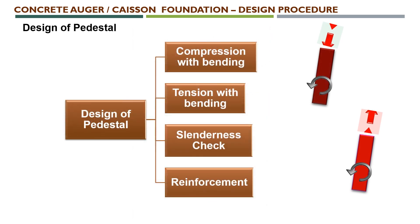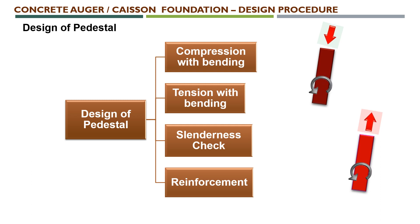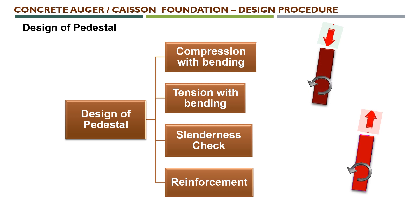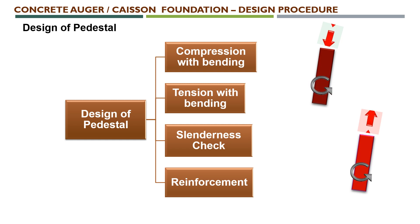Coming to the design of pedestal, we had already seen this in pad and chimney Type 1 foundation design procedure with detailed calculation explanation — those video links are also available in the description. Design of pedestal should have these four main components: compression with bending, tension with bending, slenderness check, and for both compression with bending and tension with bending we need to calculate the reinforcement.